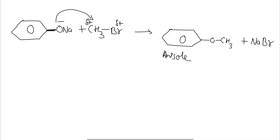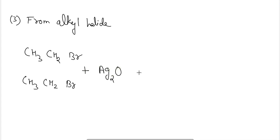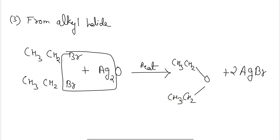The last method for preparation of ether is from alkyl halide using silver oxide. Two molecules of ethyl bromide are reacted with silver oxide and heated to obtain two molecules of AgBr, and the remaining ethyl groups combine to form ethoxyethane. In the next class we will see the physical and chemical properties of ethers to end this chapter.